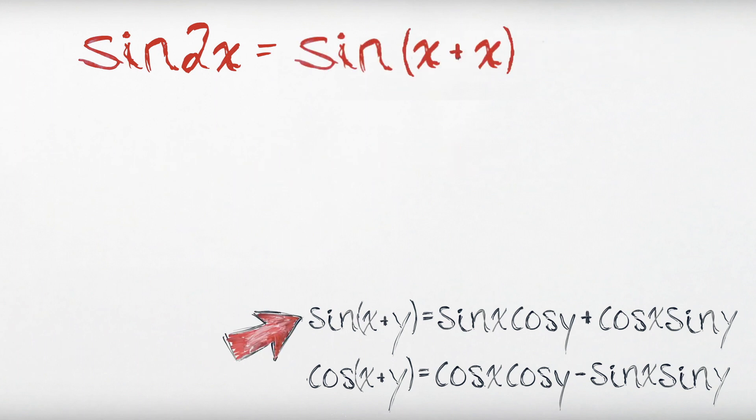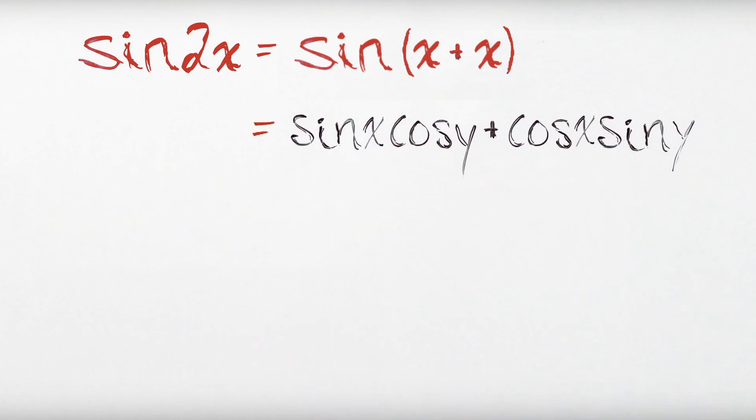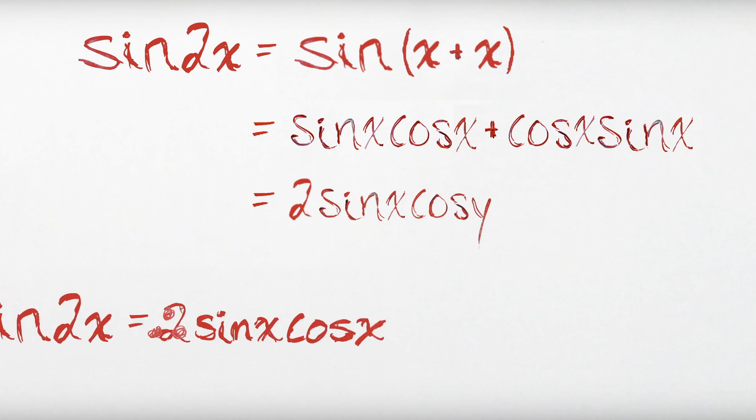Hey, that kind of looks like the left side of this identity, except instead of a y, I have another x. So if I replace the y on the right-hand side with an x, we get this expression. But aren't these two things the same? Yeah. And when you have two of something, you might as well just say you have two of them. Boom, there's the first one.